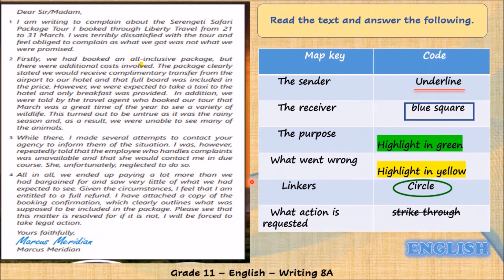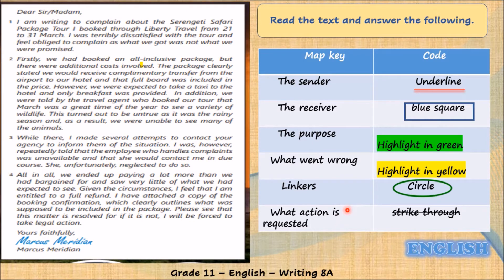Let's have our book page 117. Look at the text. You can tell from the layout of the text that it's going to be a letter or an email — and as we said earlier, it's going to be a complaint letter or email. Read the text and answer the following. We are going to use a map key strategy. We have the keys and the codes. You are going to underline the sender and the receiver, put it in a blue square, then highlight in green the purpose of this letter, highlight in yellow what went wrong during this trip, then circle the linkers and strike through what action is requested.